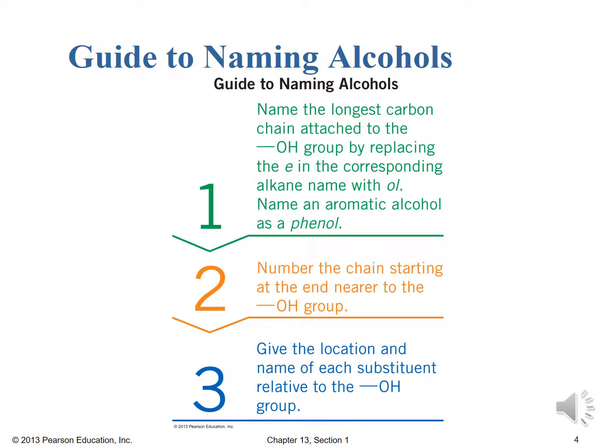In this first lecture we're going to talk mostly about naming these different substances — alcohols, phenols, and thiols. First up is our guide to naming alcohols. Naming follows the schemes from chapters 11 and 12 and builds on that. We find the longest carbon chain that contains that OH group, then replace the E from the alkane name with OL, so alcohol gives OL endings. If it's an aromatic alcohol, we name it as phenol.